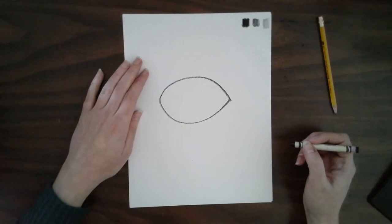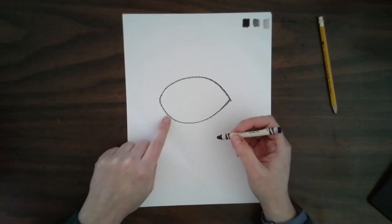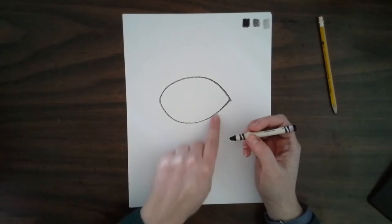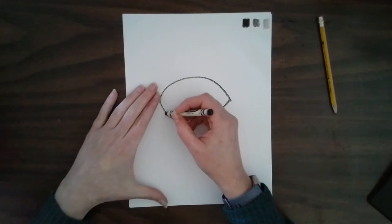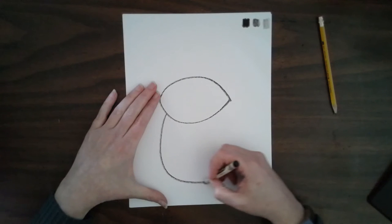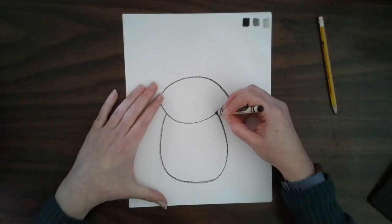Right now I'm going to add a body. So down here I'm going to make another U shape. This one's going to be a little bit bigger. There we go.